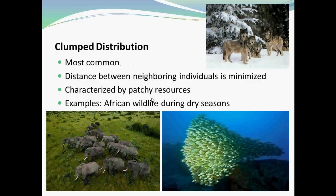Clumped distribution is the most common type. The distance between neighboring individuals is minimized, so they live close together, and it's characterized by patchy resources. An example is African wildlife during dry seasons — elephants, antelope, wildebeest, and lions are all found clumped together around water sources because that's their only source of water needed to survive. Wolf packs are also a good example, as they stay together for protection, to raise their young, and for hunting.